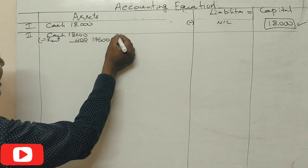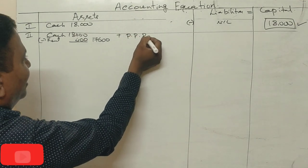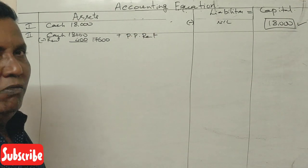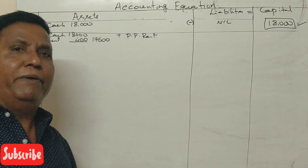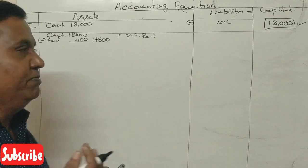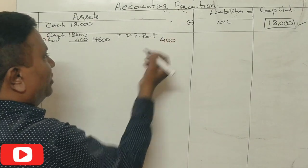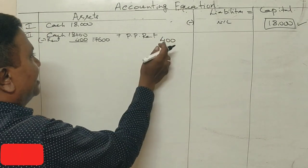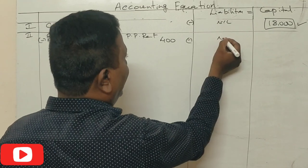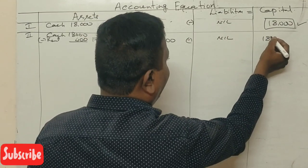When we pay prepaid rent, we pay an advance payment of ₹400. Cash decreases but prepaid rent (an asset) increases. So assets are: cash ₹17,600 plus prepaid rent ₹400. Liabilities are nil and capital is ₹18,000.